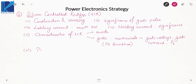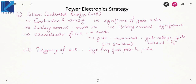The next topic in SCR is triggering of SCR. There are various methods of triggering, like thermal triggering, light triggering, and gate pulse triggering. You will also study the concept of high-frequency gate pulse and the pulse transformer — how the pulse transformer is used.